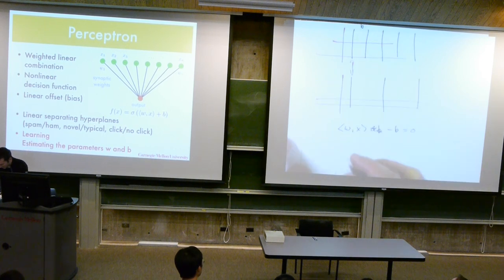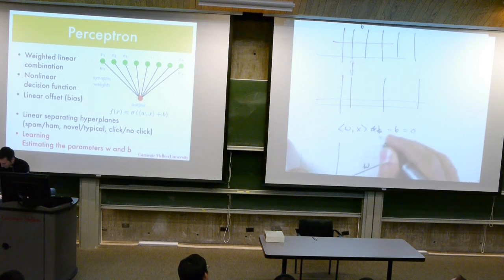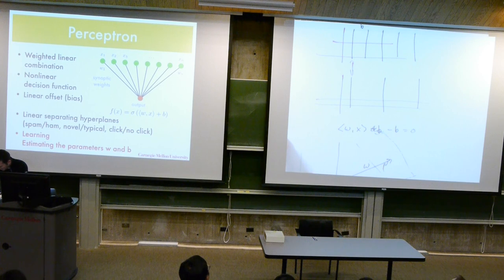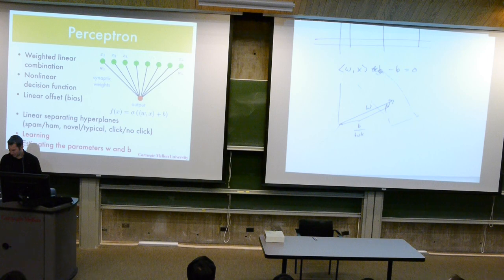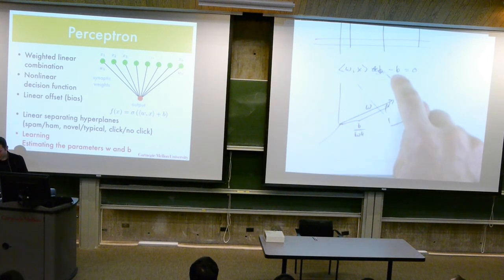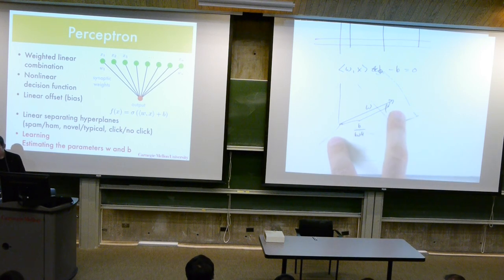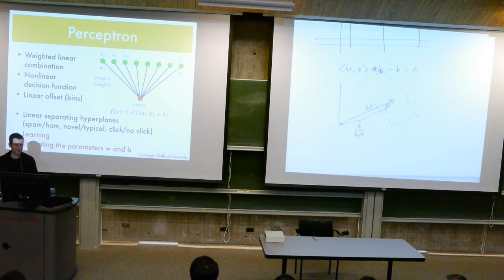So if this is my coordinate system and this is w, it specifies the hyperplane, and there's a right angle here. The intercept is given by b over w — because the larger w is, the easier it is to achieve b. That means we have a little bit of a degree of freedom here: how do we choose the pair w and b? Because if I multiply both of them by 20, I get the same hyperplane. We'll actually exploit that later on when we look at linear classifiers.